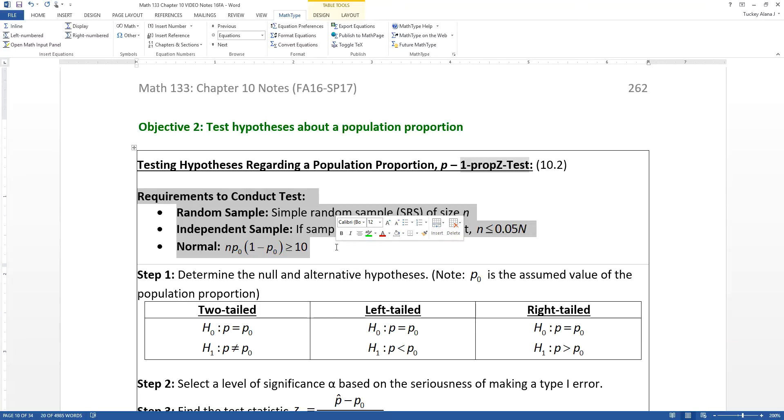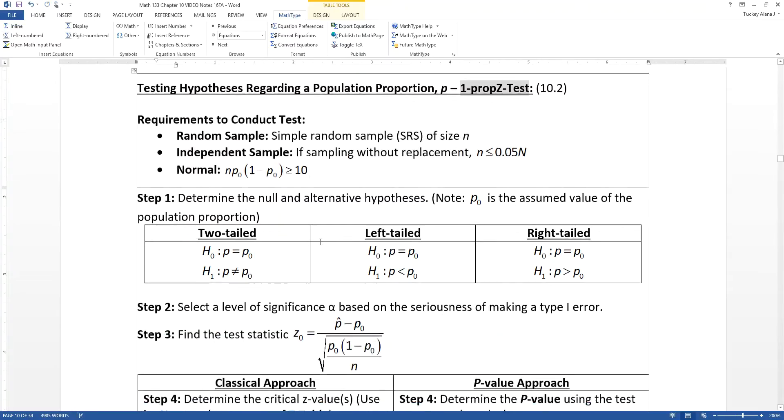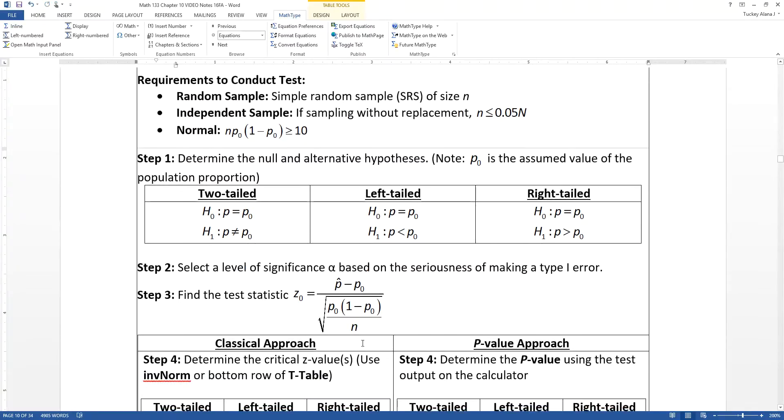A true hypothesis test, you would check the conditions to make sure that it's appropriate to conduct the hypothesis test, and then you would follow through the six steps.